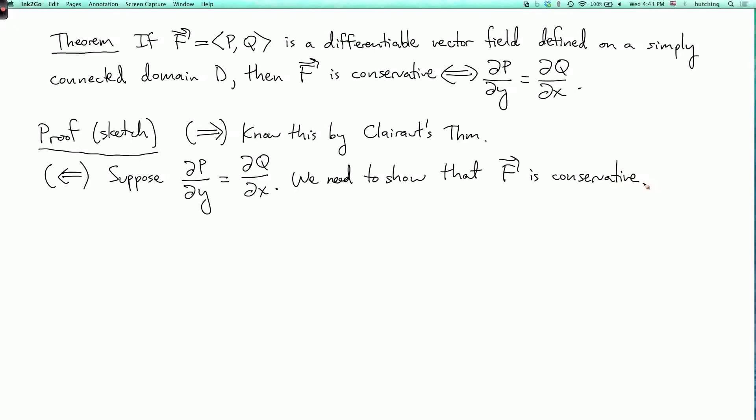How can we show that f is conservative? Well, we have another theorem which says that f is conservative if and only if the integral of f along any closed loop is zero. So it's enough to show that the integral over C of f·dr equals zero for every closed curve C in D.